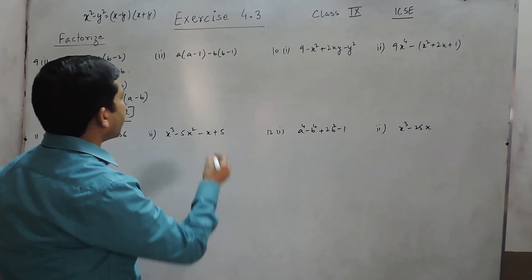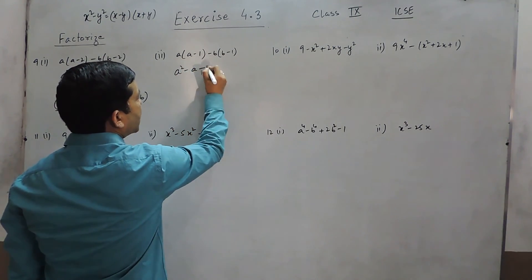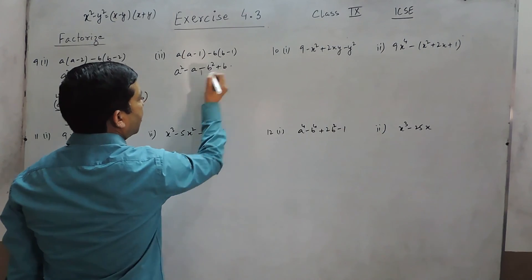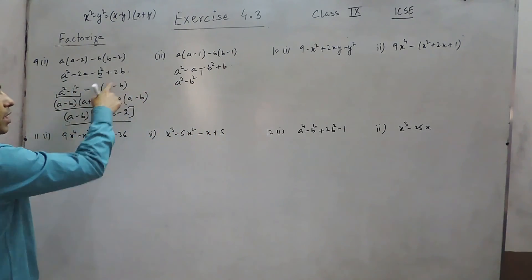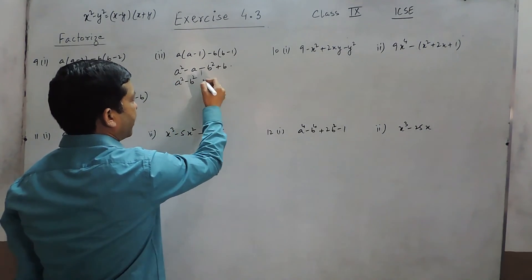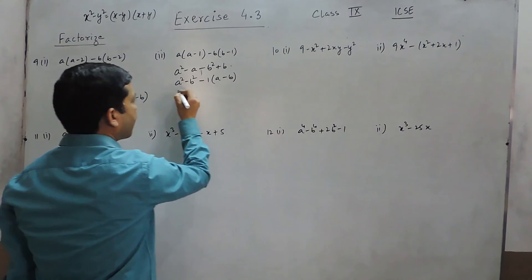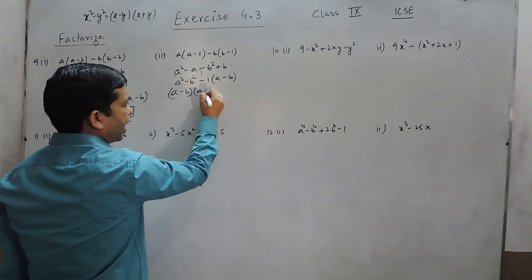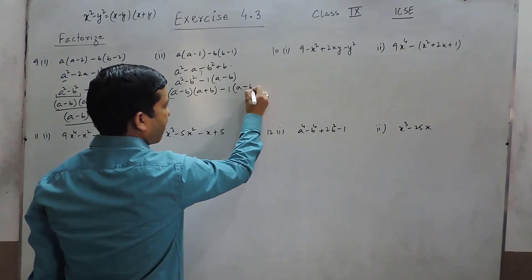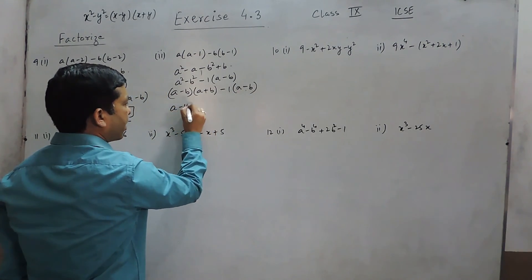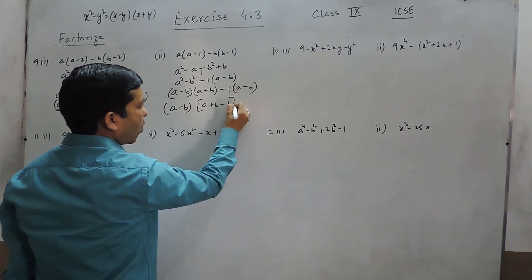This is also the same type: it is a squared minus a minus b squared plus b. We can write a squared minus b squared; here it is minus a plus b. If I take minus 1 common it becomes a minus b. So this can be written as a minus b multiplied by a plus b, then minus 1 into a minus b. If I take a minus b common in both terms, it is a plus b minus 1.